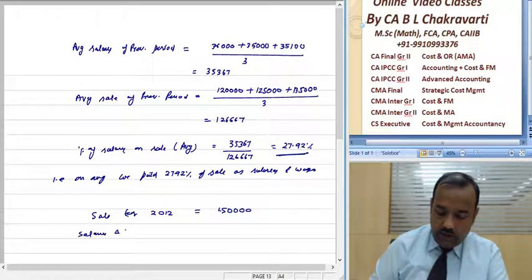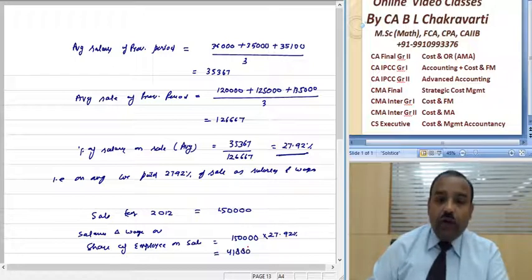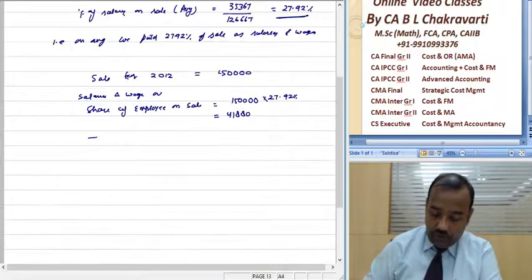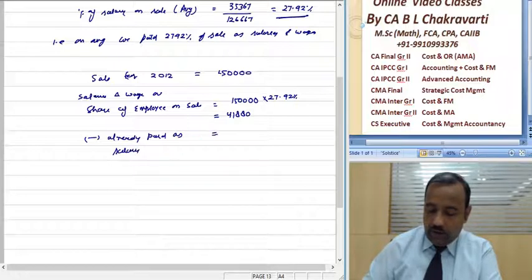Salary and wages or share of employee on sale: 27.92% of 1,50,000 equals 41,880 rupees. Already paid as salary is 36,000.